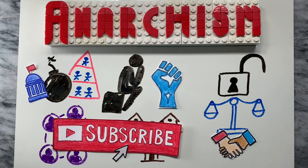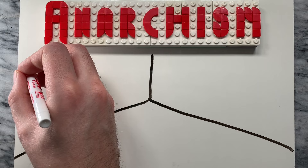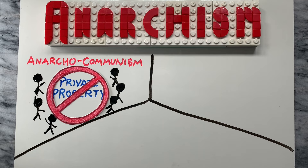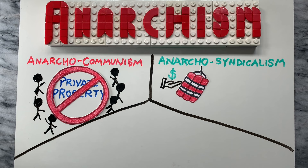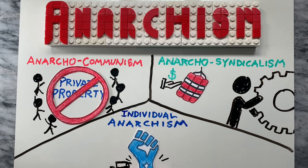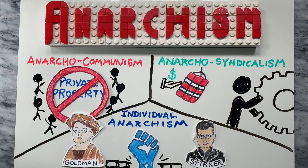There are many different forms of anarchism. Some of the most well-known include anarcho-communism, which advocates for the abolition of private property and the establishment of a classless, stateless society based on communal ownership and cooperation. Next is anarcho-syndicalism, which seeks to abolish the wage system and replace it with a system of workers' self-management and direct democracy. Also there is individualist anarchism, which emphasizes the importance of individual freedom and autonomy and is often associated with the writings of figures like Emma Goldman and Max Stirner.